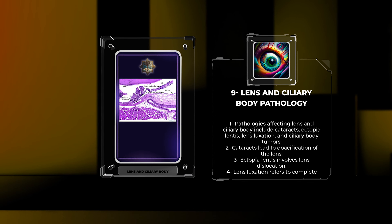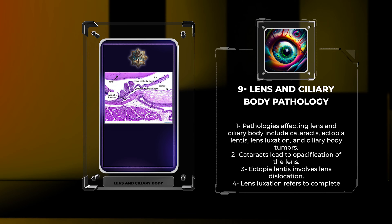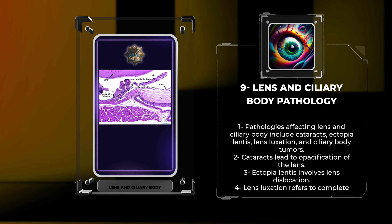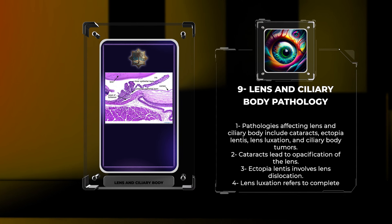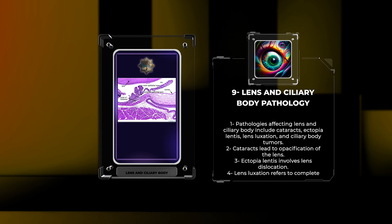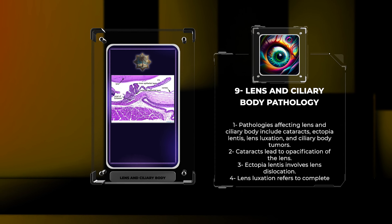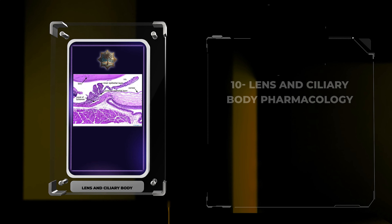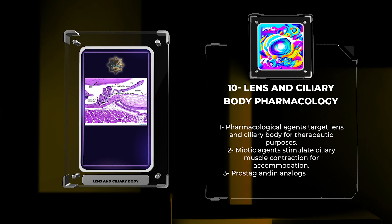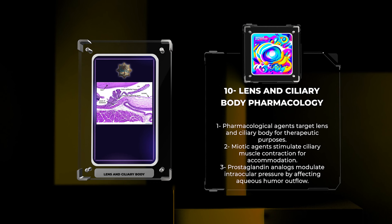The ciliary body consists of three main components: the ciliary muscle, ciliary processes, and pars plana. The ciliary muscle is a smooth muscle responsible for the adjustment of lens shape during accommodation. It consists of circular fibers, meridional fibers, and radial fibers. The ciliary processes are folds located at the attachment point of the ciliary body to the lens. They contain a rich vascular network and are covered by a double-layered epithelium with secretory capabilities.